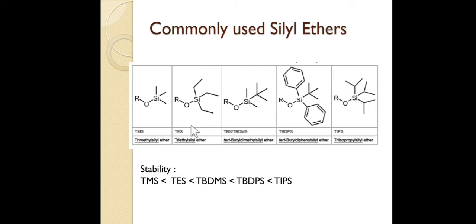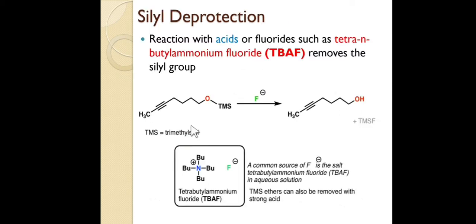Now let's see the silyl deprotection. Silyl ethers can be deprotected in the presence of protic acids or fluorides such as TBAF — tetrabutylammonium fluoride. Fluoride has a very strong affinity for silicon, so it will attack the silicon and release the oxygen as a free OH group. We can use either acids or any source of fluoride to deprotect silyl groups.